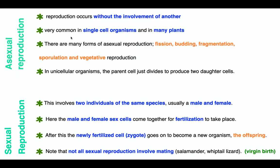The major difference between sexual and asexual reproduction is that for sexual reproduction, two individuals of the same species — usually a male and a female — are necessary. For asexual reproduction, reproduction occurs without the involvement of another individual. It is very common in single-celled organisms and in many plants. Examples of asexual reproduction include fission, budding, fragmentation, sporulation, and vegetative reproduction.